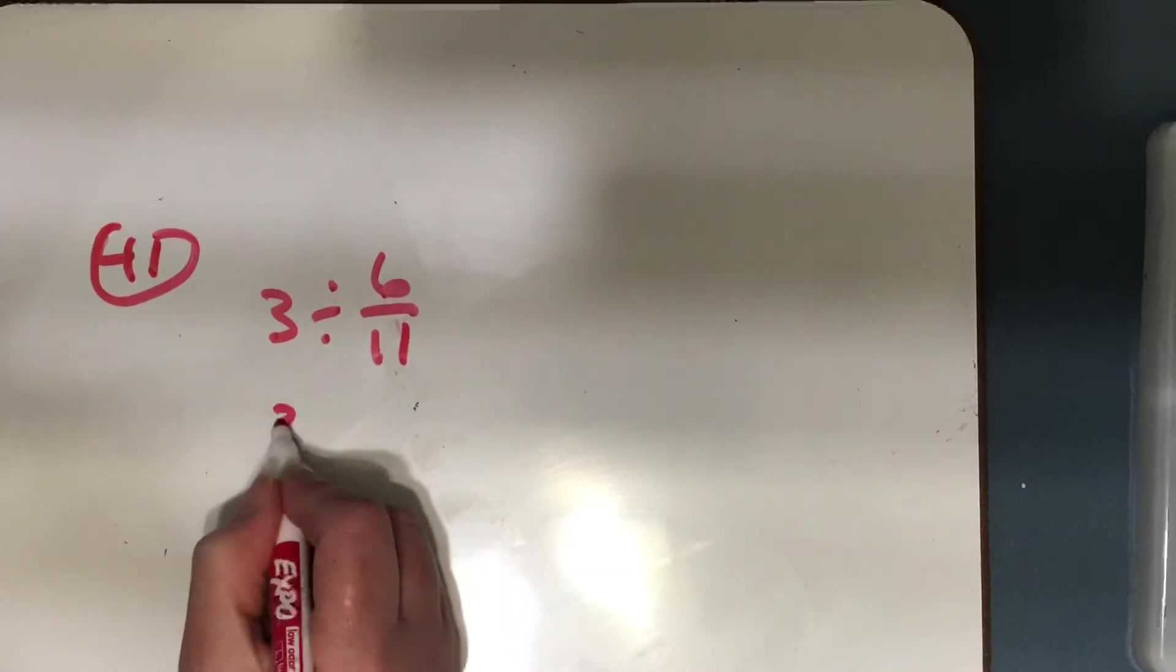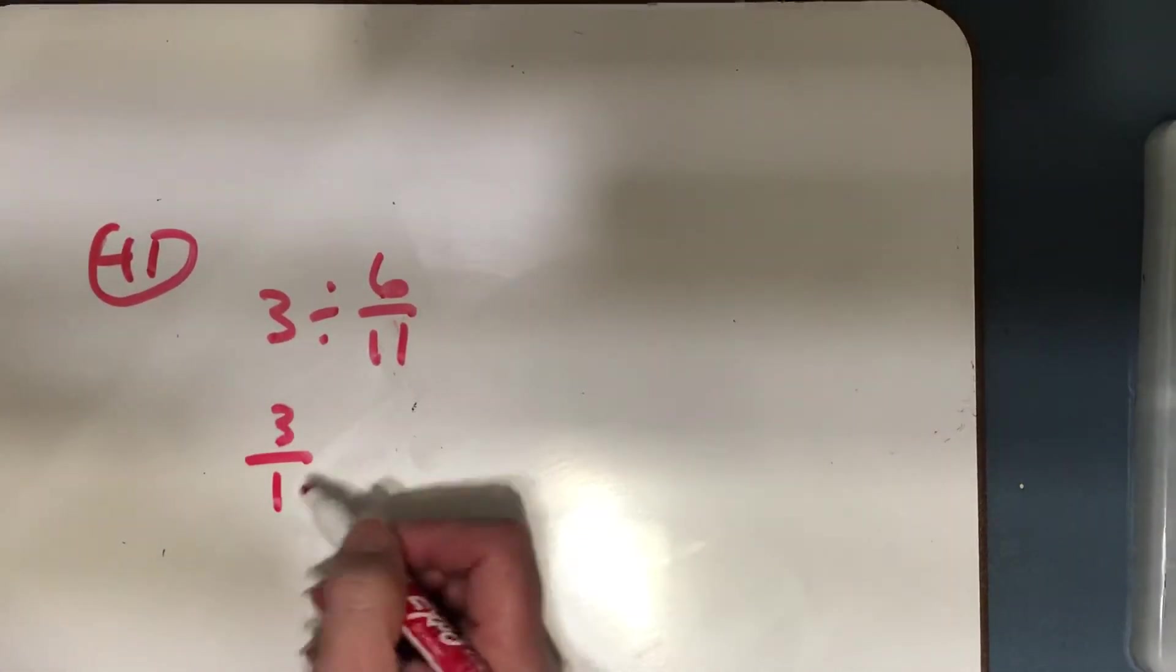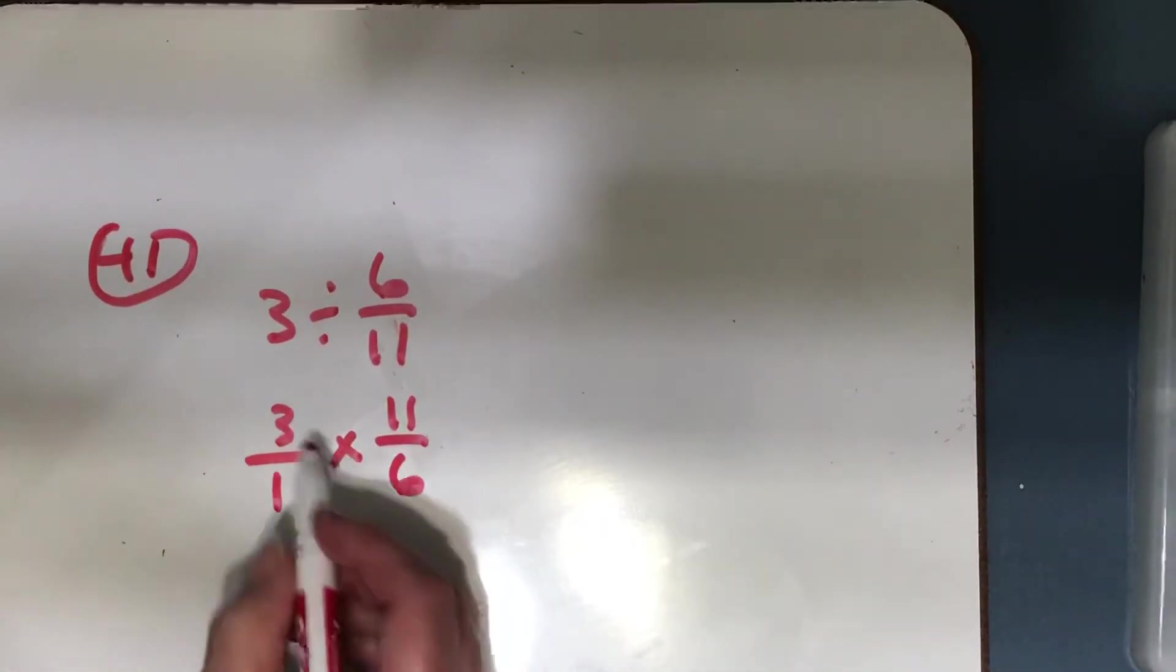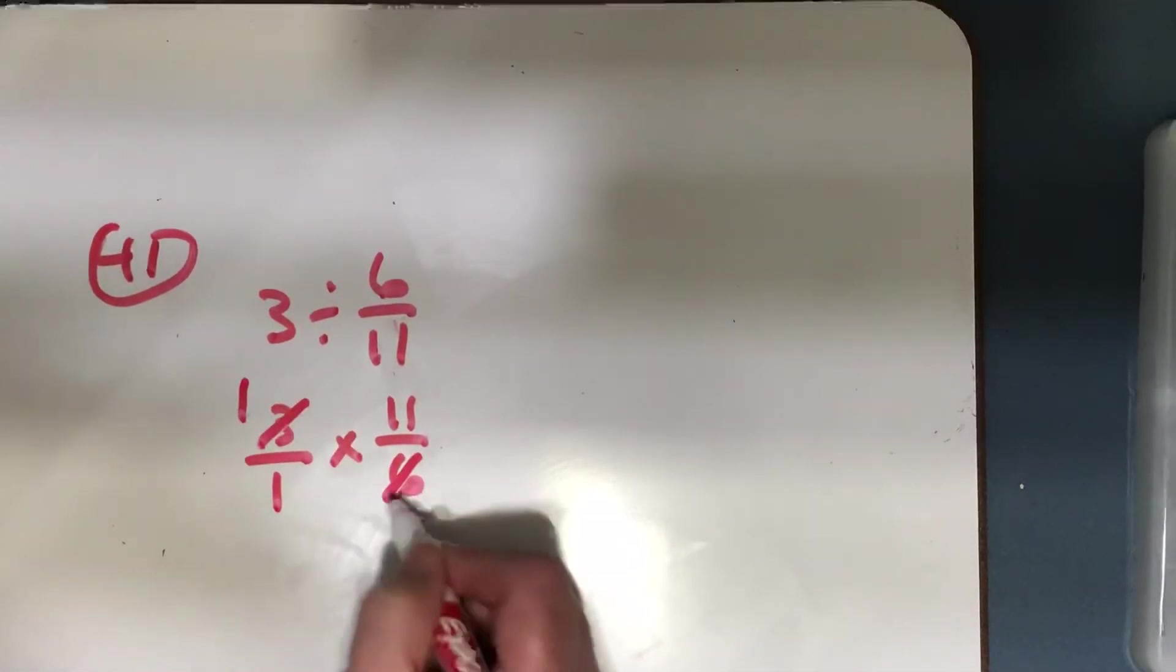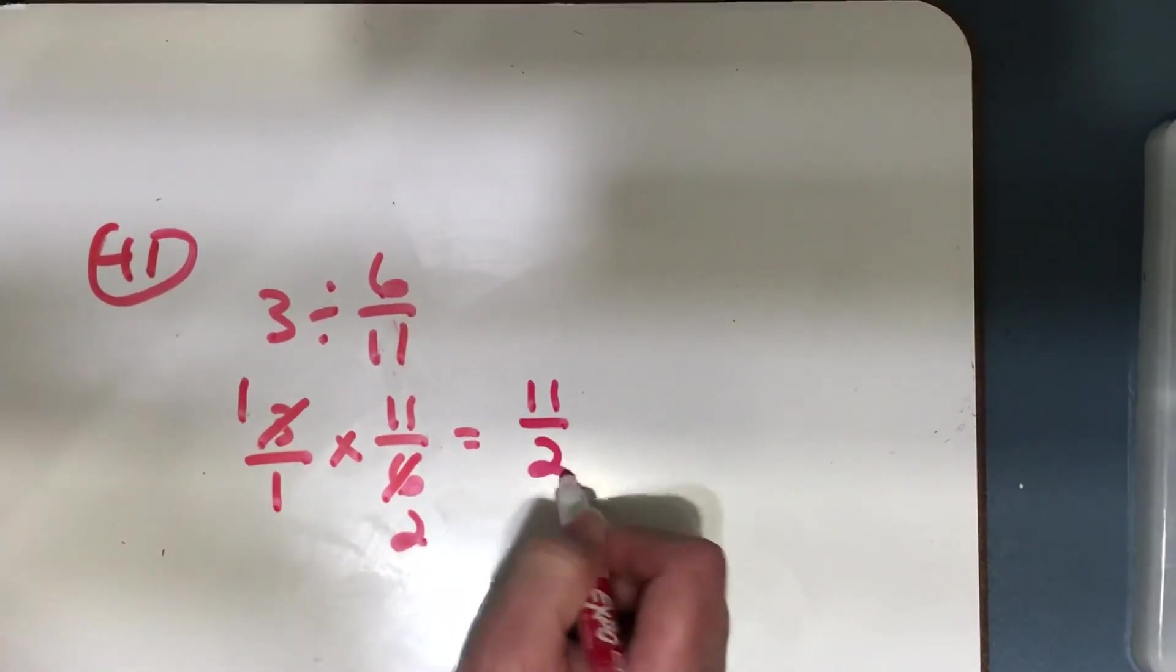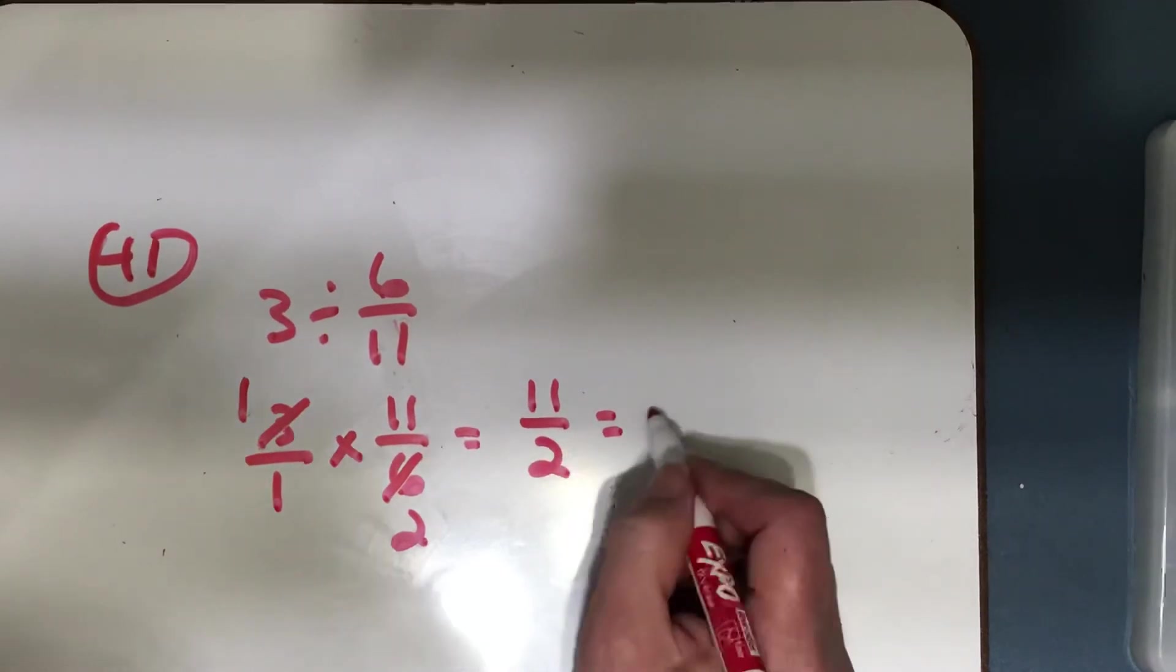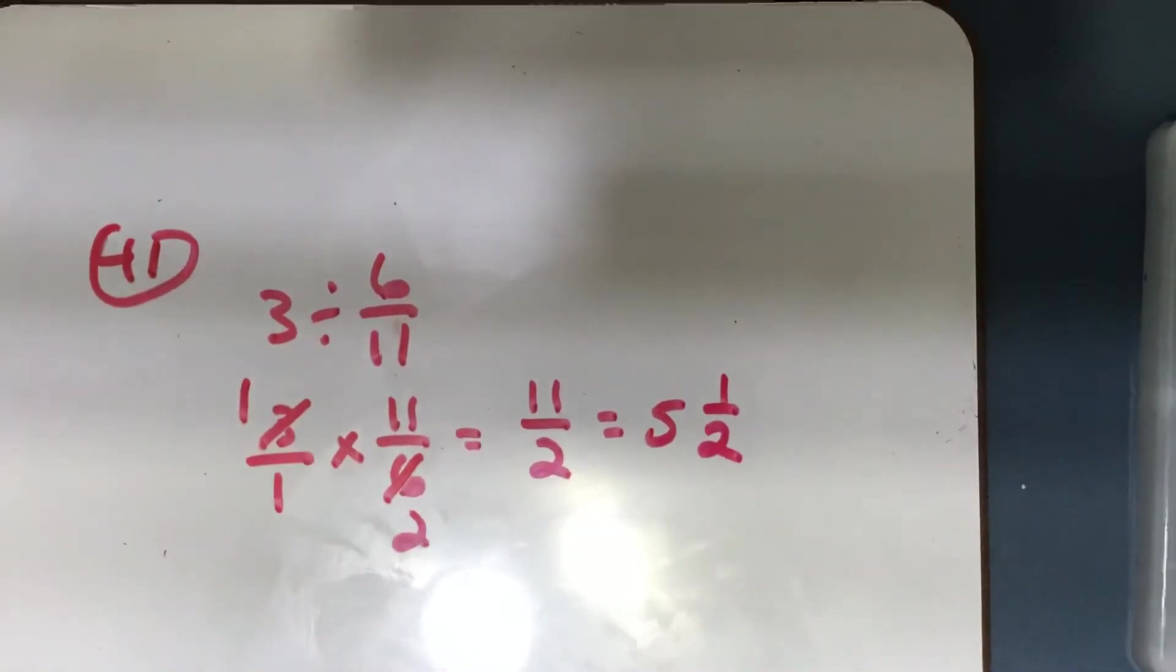Okay, so we're going to do 3 over 1. We rename our whole number as a fraction, times the reciprocal of the divisor. I can simplify. 3 divided by 3 is 1, 6 divided by 3 is 2. Then I multiply. I get 11/2. Don't forget to change your improper fraction to a mixed number. 2 goes into 11 five times with one left over. 5 and 1/2.